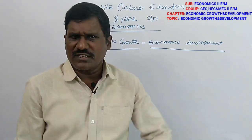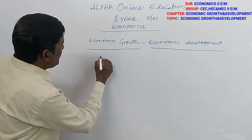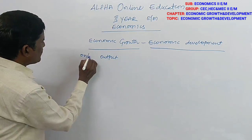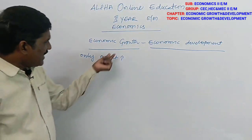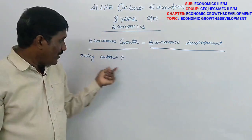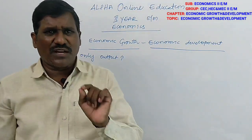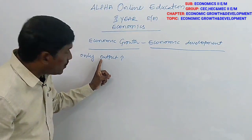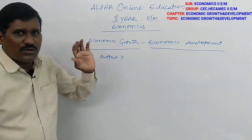How can we understand economic growth and economic development? For example, in economic growth their aim is only to increase the output. Only the increases in the output is called economic growth. The definition is: only the changes in the real output of goods and services is called economic growth.